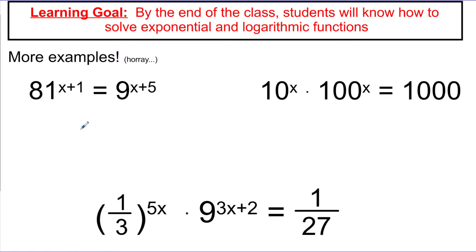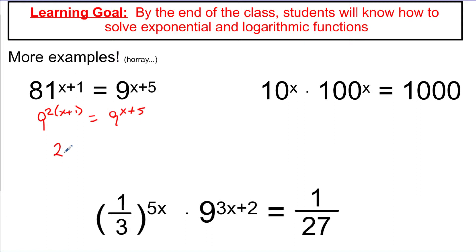Here are some slightly more advanced examples. Looking at 9 to the x plus 1 equals 9 to the x plus 5 — wait, I can write 81 as a base of 9 because 81 is 9 squared. When I write it as 9 squared, I need to connect that new exponent of 2 with the exponent x plus 1 already there — the answer is to multiply them together. Distributing, 2 times x plus 1 gives 2x plus 2 equals x plus 5, so x equals 3.